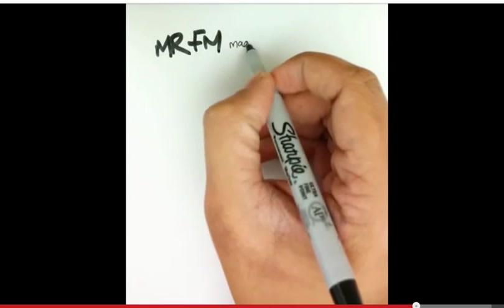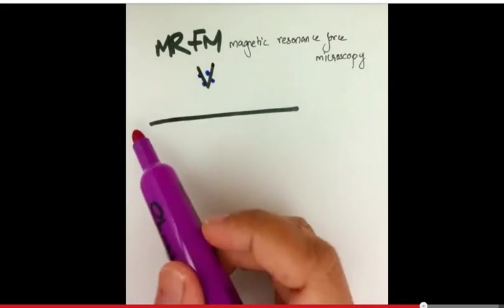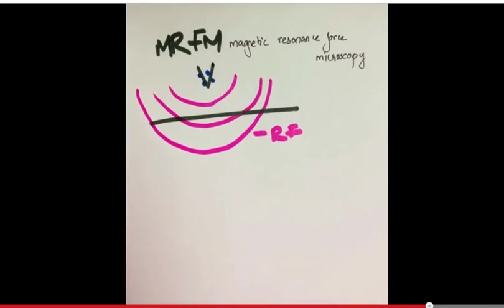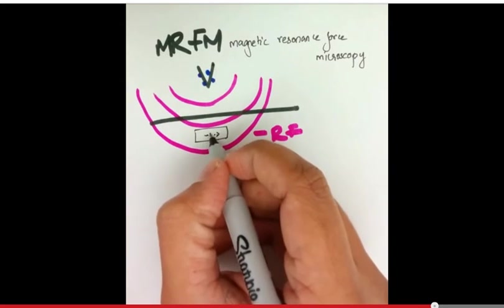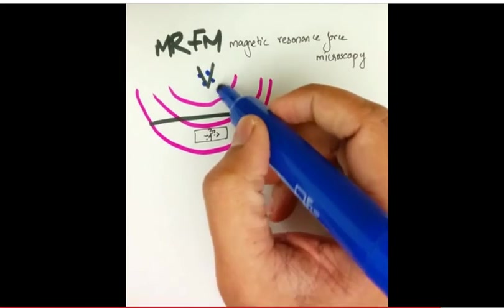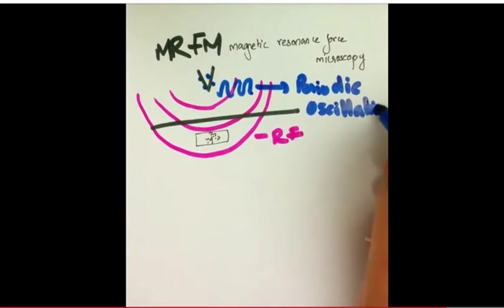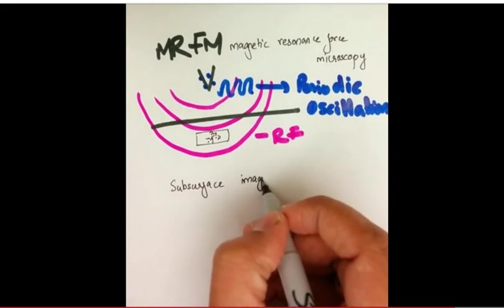Magnetic resonance force microscopy is a technique that combines MRI and MFM. Modulated radiofrequency waves are used to invert nuclear spins inside a sample. As the spin configuration changes, it creates a periodic oscillation of the magnetic tip. In some configurations, the tip is kept stationary and the sample is mounted on an ultra-sensitive cantilever. The amplitude of oscillation so achieved is on the order of attonewtons and requires specialized instruments to quantify. MRFM enables subsurface imaging and also 3D imaging of the sample.